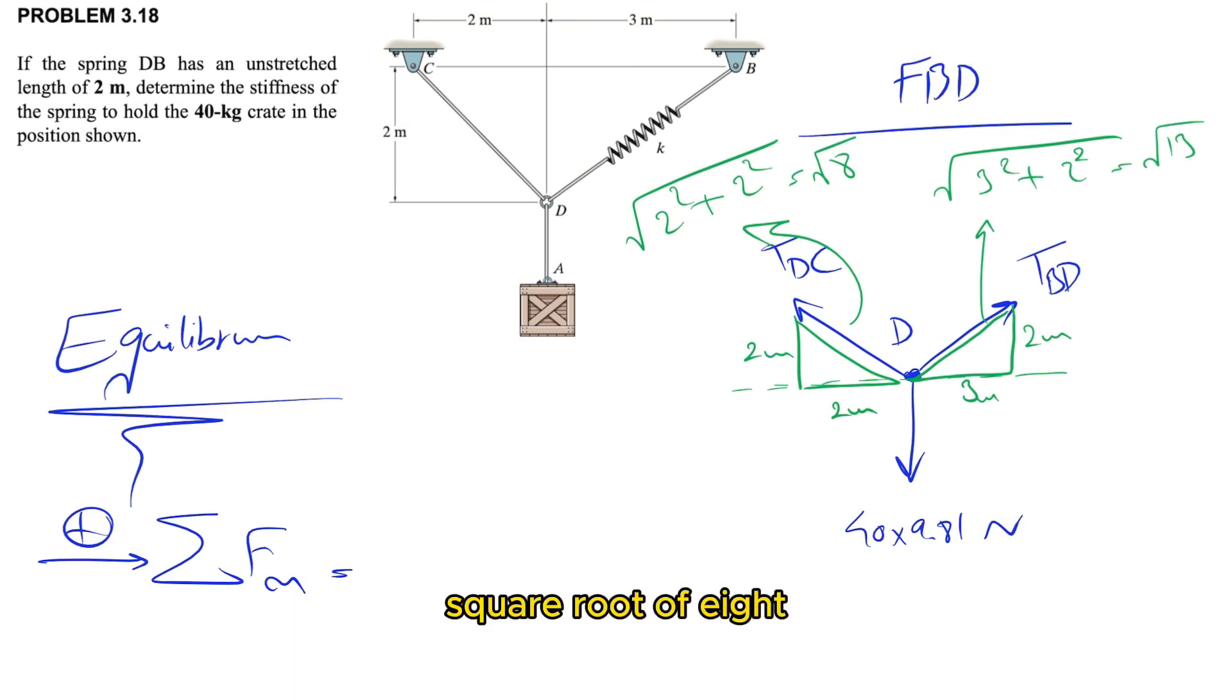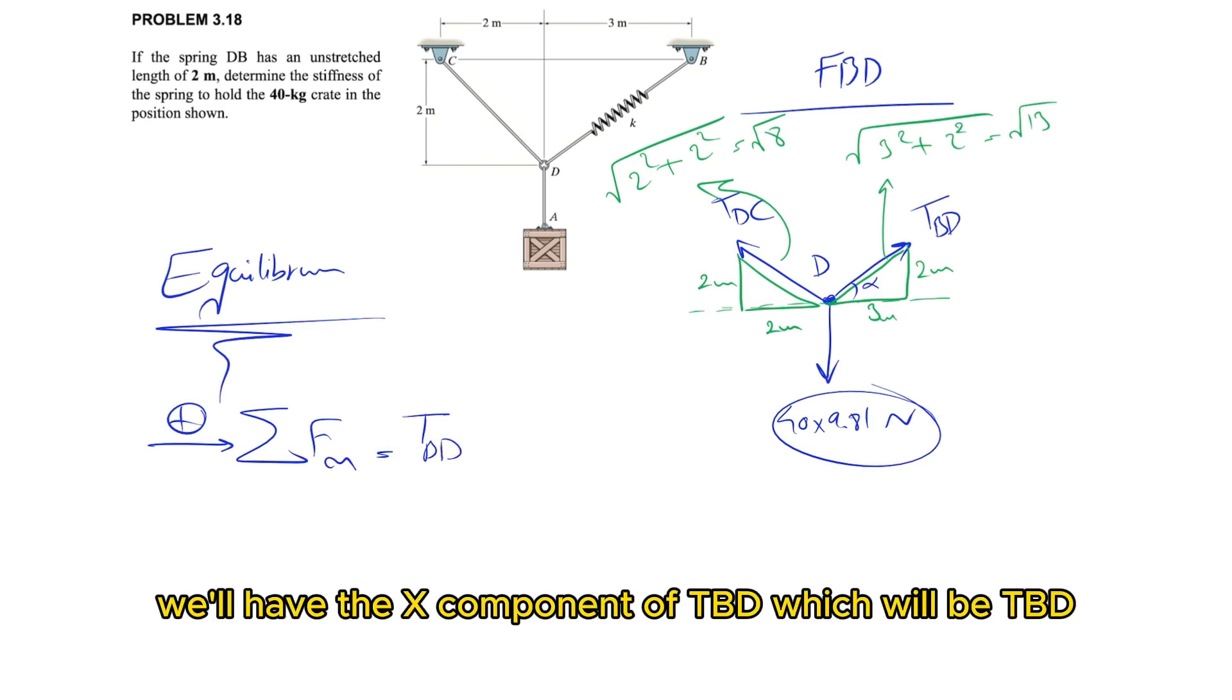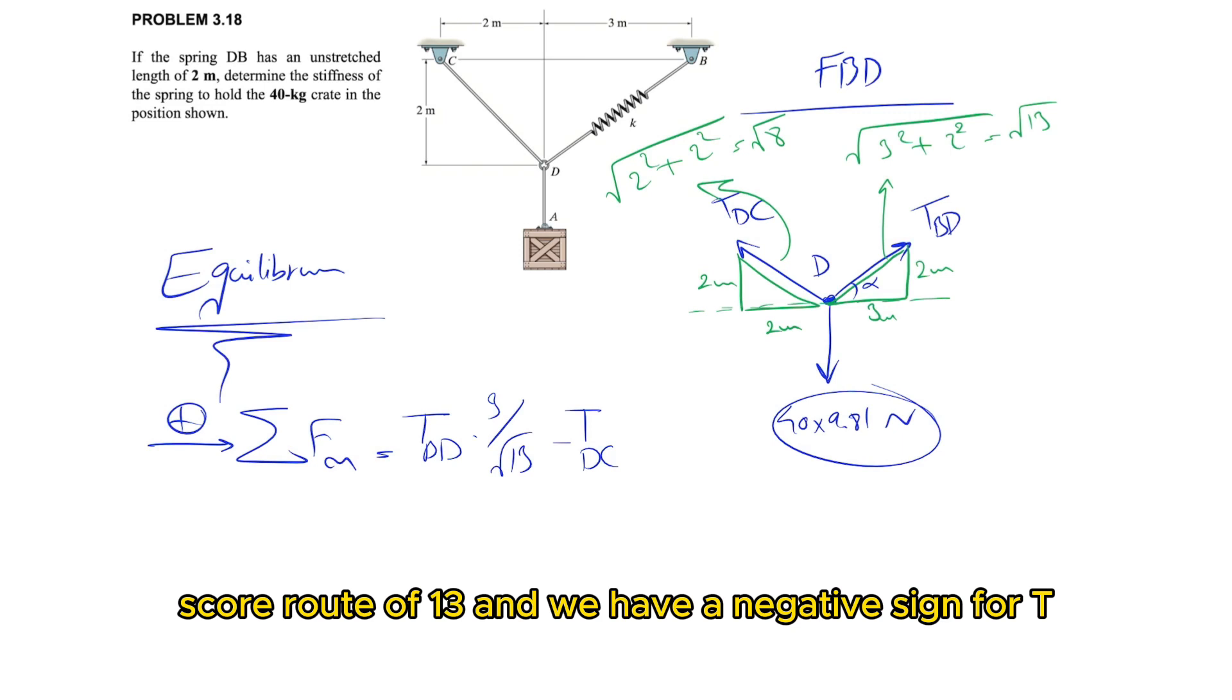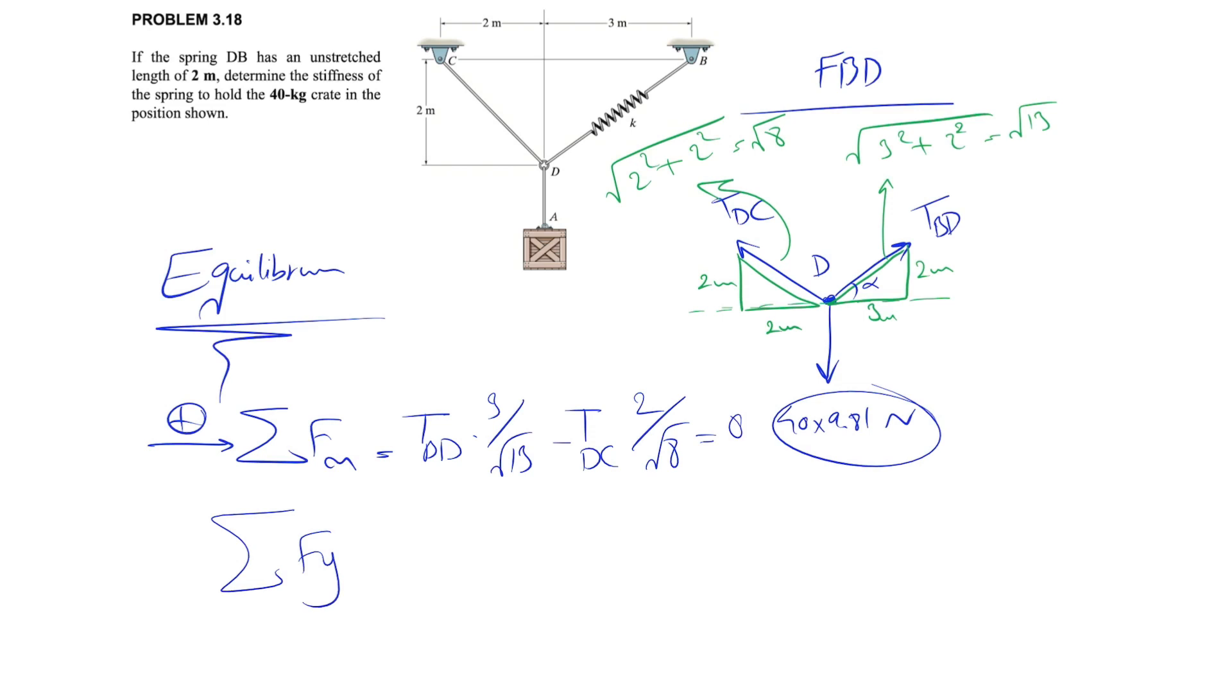Starting with our F_x equation, we have the x-component of T_BD, which is T_BD times 3 over square root of 13, and we have a negative sign for T_DC, which is 2 over square root of 8. That would be our x-equation.